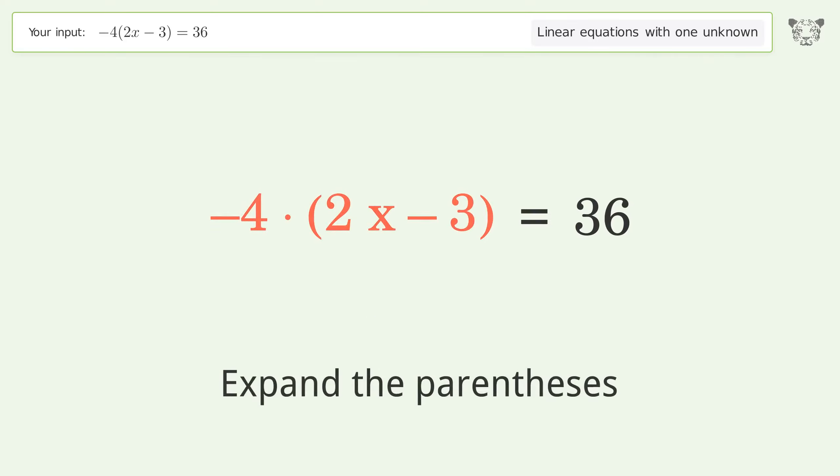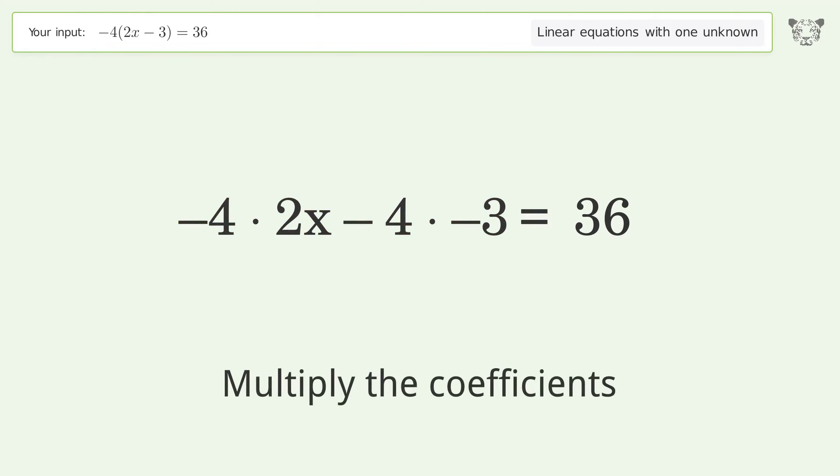Expand the parentheses. Multiply the coefficients. Simplify the arithmetic to get -8x + 12 = 36.